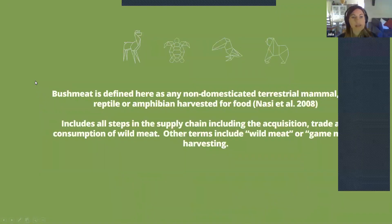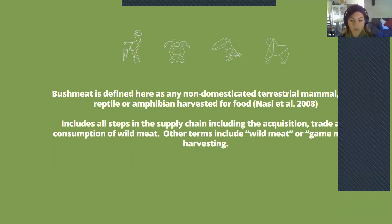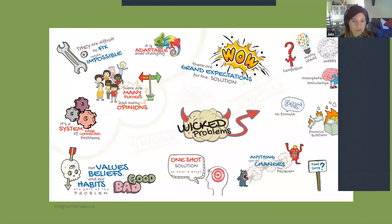Bushmeat is defined as any non-domesticated terrestrial mammal, bird, reptile, or amphibian harvested specifically for food. This term generally doesn't include fish or invertebrates, though one could argue they should be included. It covers all steps in the supply chain — both the hunting or acquisition of the meat, trading it, and consuming it.